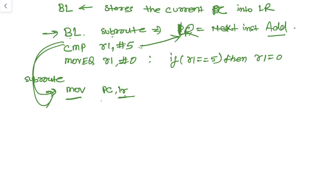When the PC arrives at MOV PC, LR inside the subroutine, it loads the previously saved link register value — the return address from the time the PC jumped — back into the program counter. Execution then continues from that return address as normal.